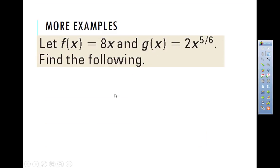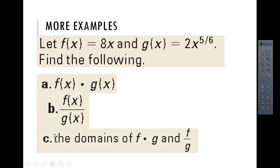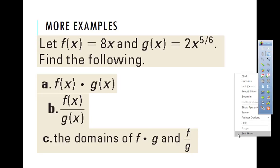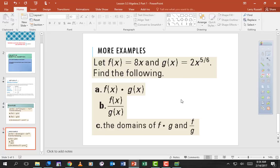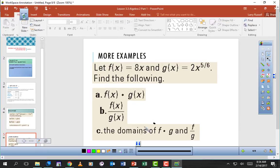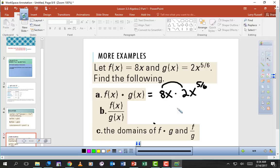Now we have two new functions, and we're going to find their product and quotient, then state the domain. Give it a try on your study guide — parts a, b, and c on the back page. Let's check the answers. When we multiply, we'd have 8x times 2x to the 5/6 power. The easy part: 8 times 2 is 16.